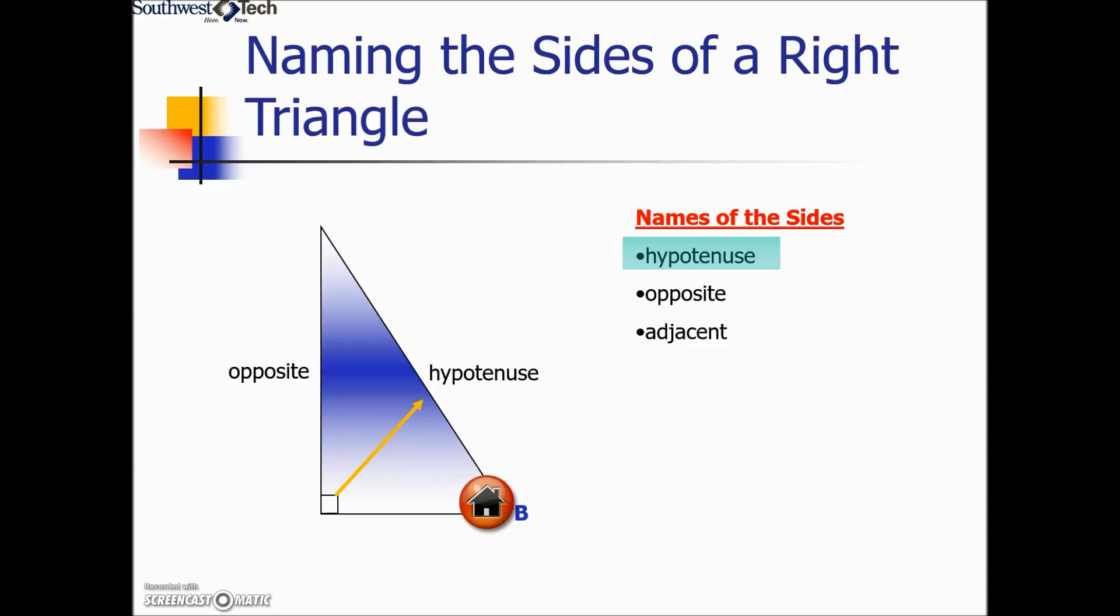It is always the side opposite the right angle, and it leaves that third unlabeled side as the adjacent.